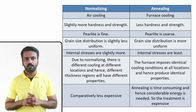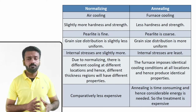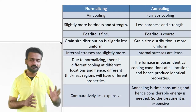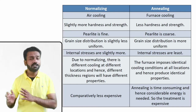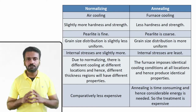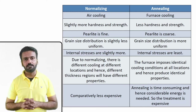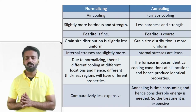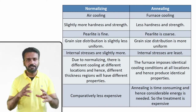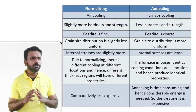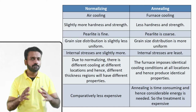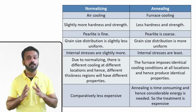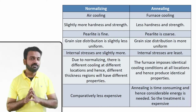Internal stresses are slightly higher in normalizing because the faster air cooling rate introduces some residual stresses in the material. In annealing, very slow cooling means chances of internal stresses are very low. Because normalizing involves faster cooling compared to annealing, there is some chance that properties may vary from place to place, meaning the structure and properties are less uniform than in annealing, which produces more uniform properties.